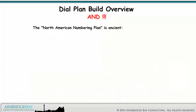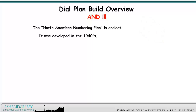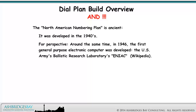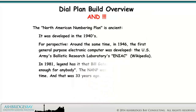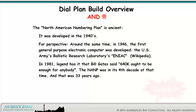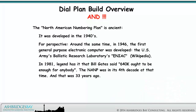The North American Numbering Plan is ancient — it was developed in the 1940s. For perspective, around the same time in 1946, the first general-purpose electronic computer was developed: the U.S. Army's Ballistic Research Laboratory's ENIAC. In 1981, legend has it that Bill Gates said, '640K ought to be enough for anybody.' The NANP was in its fourth decade at that time, and that was 33 years ago.